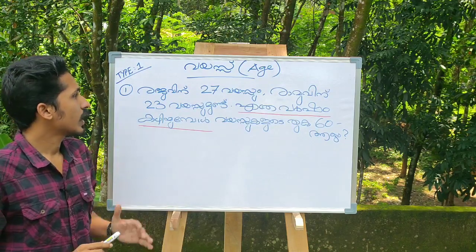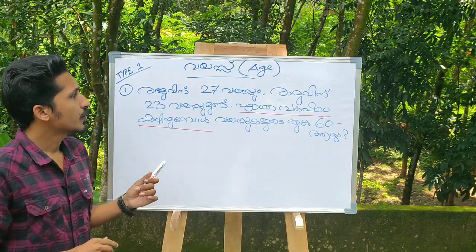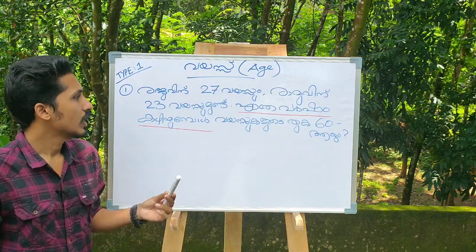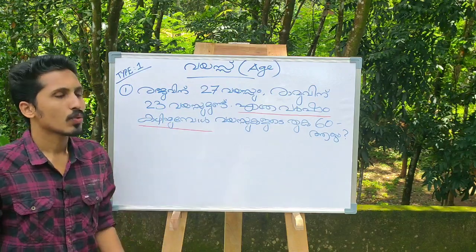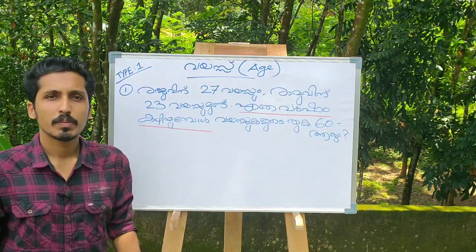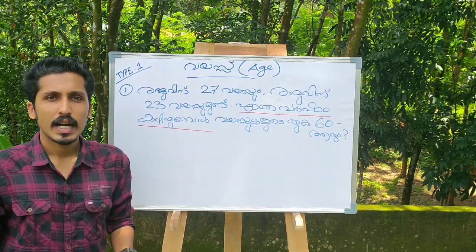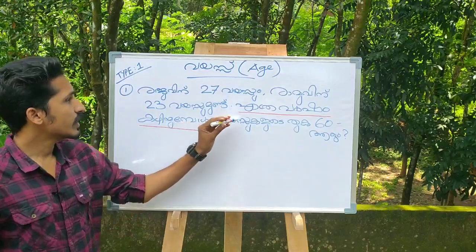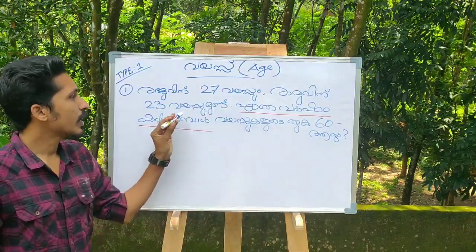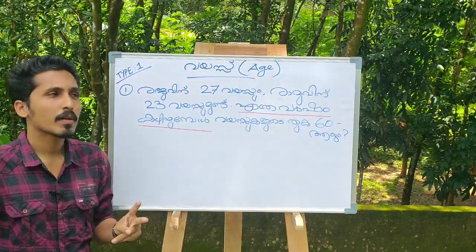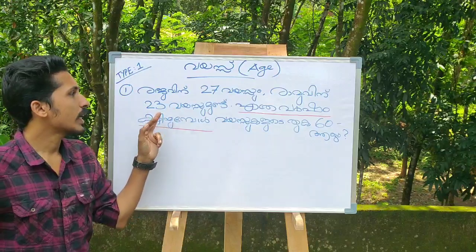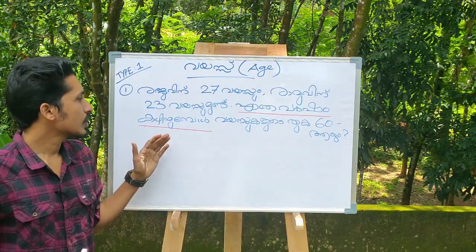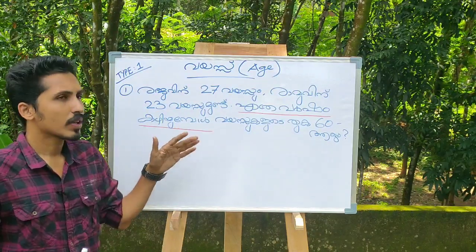The question is: Raju is 25 and Ramu is 23. How many years have passed? We have to ask a question about the previous PSE. Raju is 25 and Ramu is 23 — one is 25, one is 23. How many years have passed? The answer I have to find is 60.